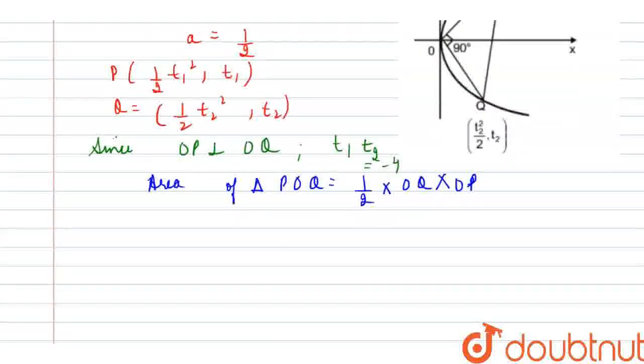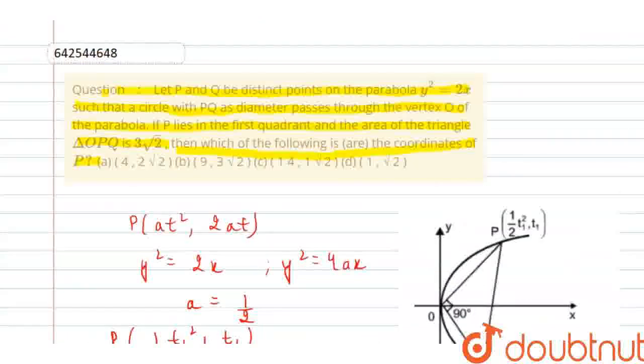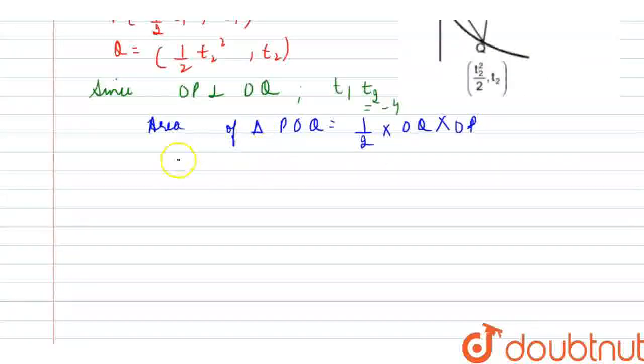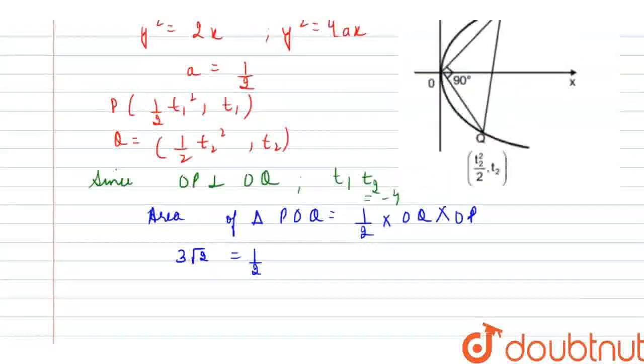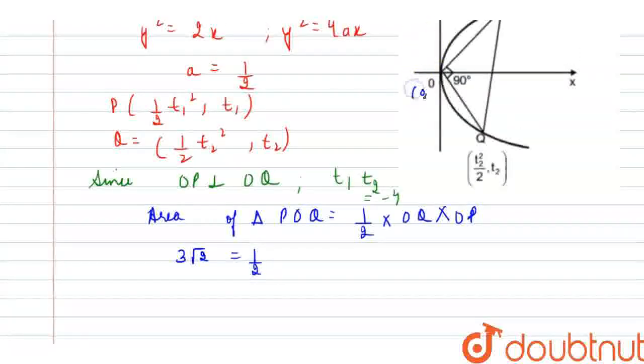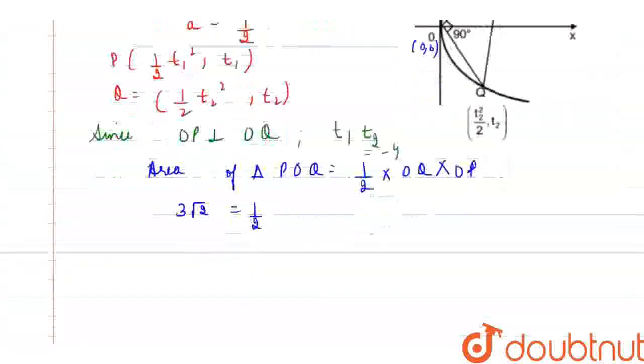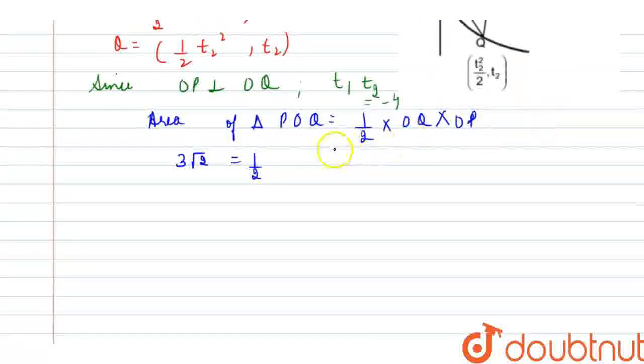Now, let's calculate further. It is mentioned that this area is equal to 3 root 2, so this is 3 root 2, that is equal to half of. Now, what would be OQ? We can see that since O is having coordinates 0, comma, 0.